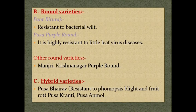Round varieties: Pantrituraj — resistant to bacterial wilt. Pusa Purple Round — it is highly resistant to little leaf virus diseases. Other round varieties: Manjri, Krishnanagar, Purple Round. Hybrid varieties: Pusa Bhairav, Pusa Kranti, and Pusa Anmol.